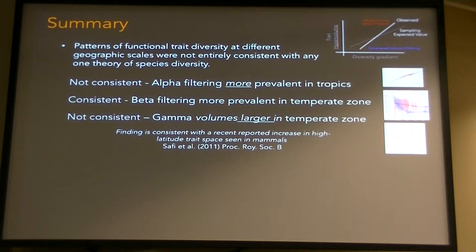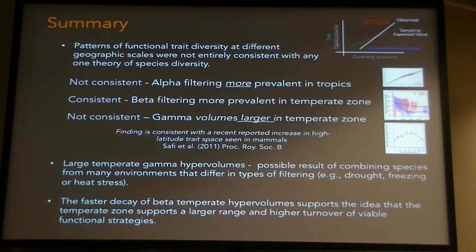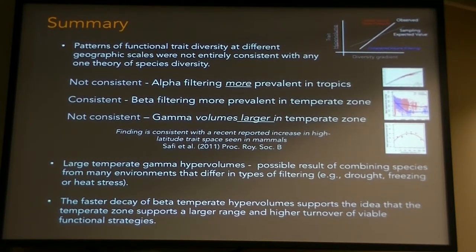The gamma volumes tend to be larger than within the temperate zone. This large temperate gamma hypervolume could be the result of many different things operating. We tend to see these larger volumes at the interface between the tropics and the temperate zone, so maybe this is an intermixing of different trait strategies. The faster decay of the beta temperate hypervolume does support the idea that the temperate zone supports a larger range and a greater turnover of functional combinations.